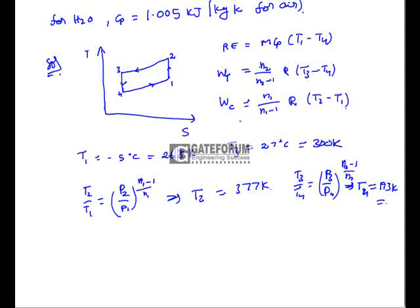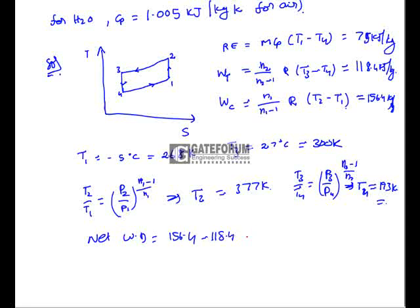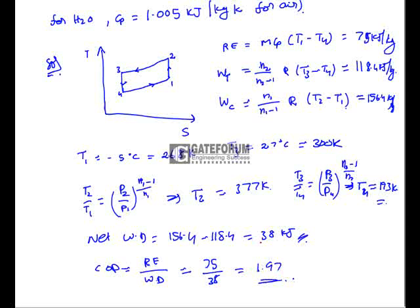Substituting all values: work done by the turbine = 118.4 kJ/kg, work done on the compressor = 156.4 kJ/kg, and refrigeration effect = 75 kJ/kg. Net work input = 156.4 − 118.4 = 38 kJ/kg. COP = refrigeration effect / net work input = 75 / 38 = 1.97. The right answer is 1.97.